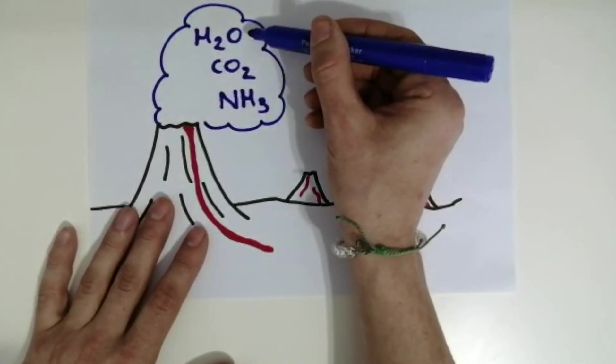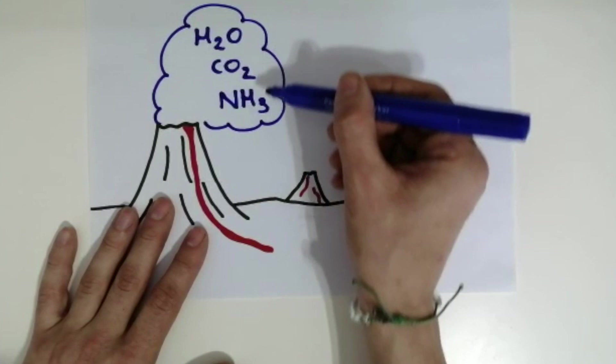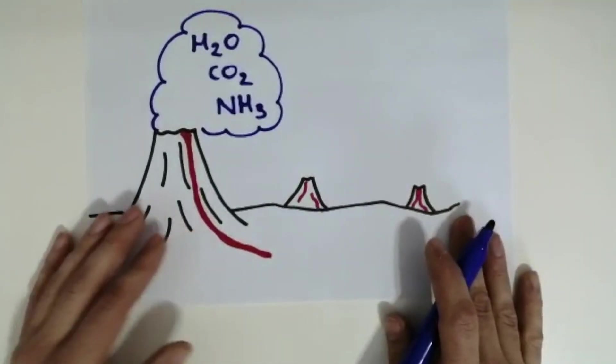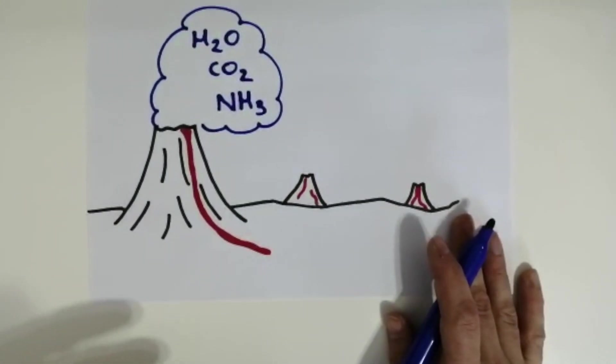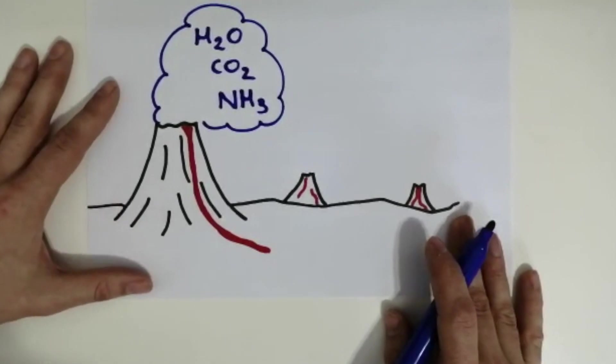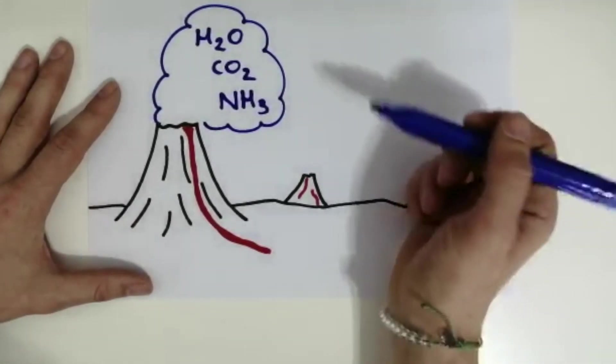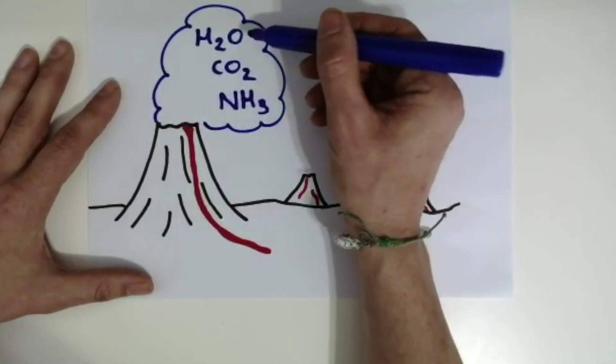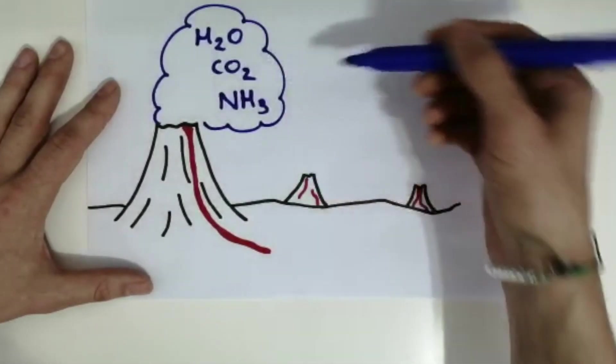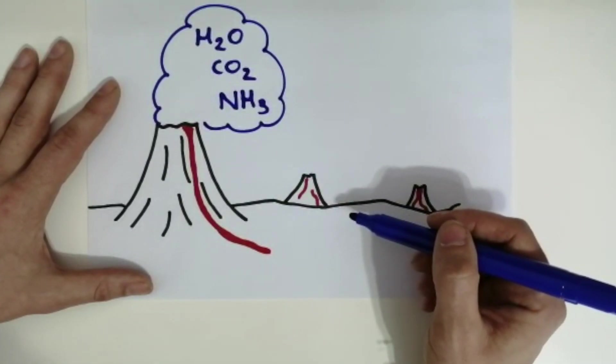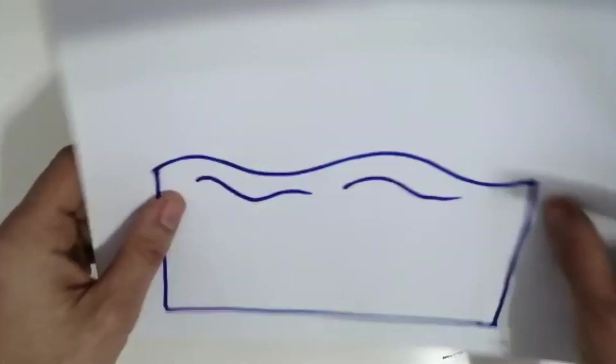Water as a gas, carbon dioxide as a gas, and ammonia NH3 as a gas. Now the Earth was very hot for the first billion years, but then it slowly started to cool down. Eventually it reached a point where it was cool enough that some of the water vapor could cool down and condense to form liquid water and form oceans.